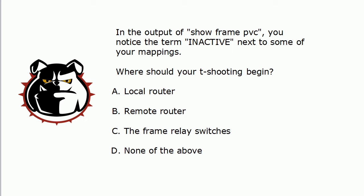You run Show Frame PVC and you notice the term 'inactive' next to some of your mappings. Now that sounds bad, and you're right it is. But where should your troubleshooting begin? Should you start locally on the router you're on, on the remote router, on the devices in the middle — the Frame Relay switches — or none of the above?